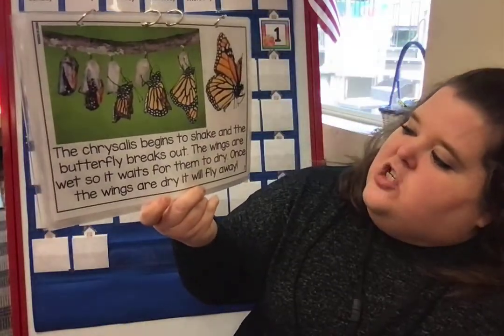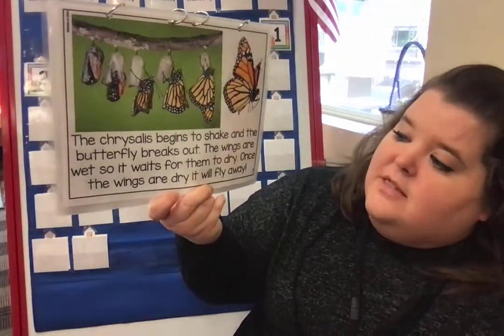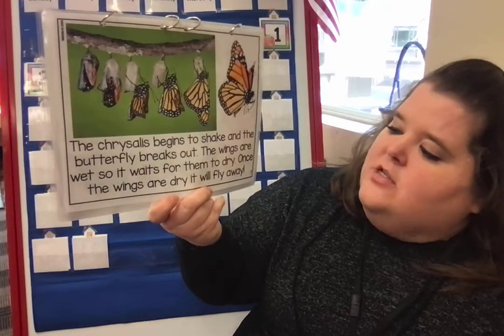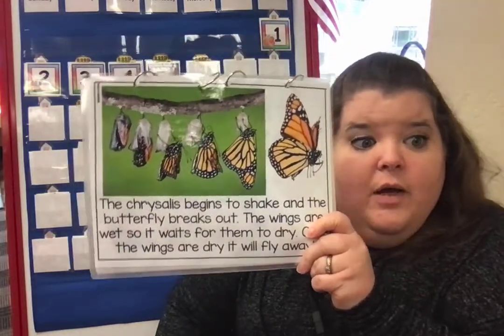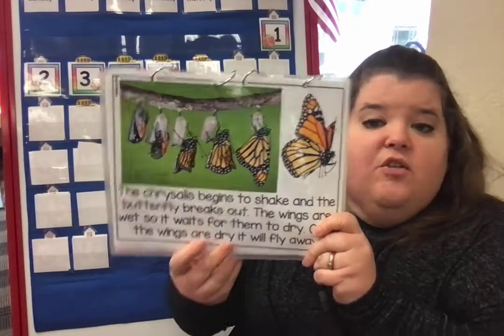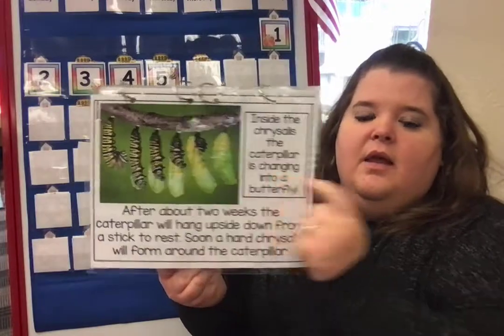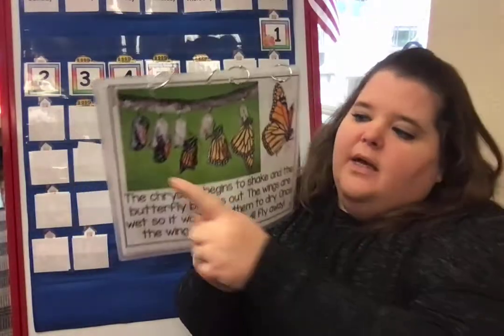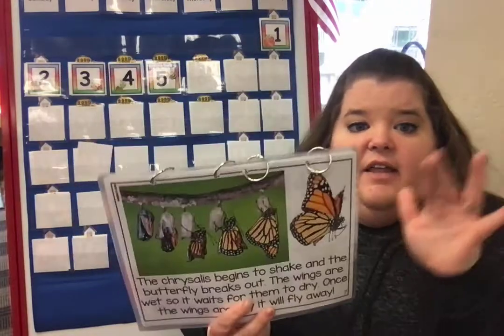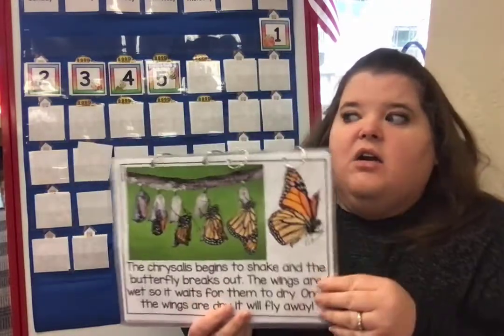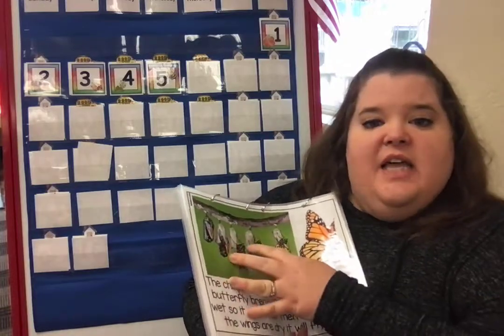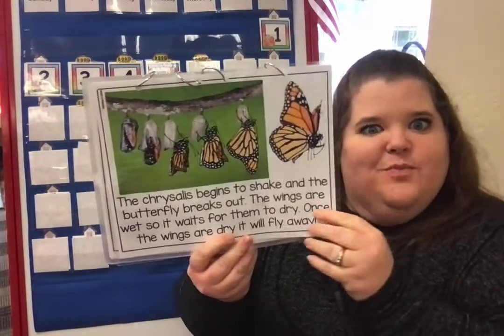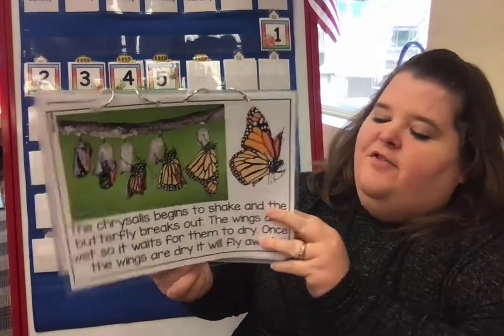Inside the chrysalis, the caterpillar is changing into a butterfly. The chrysalis begins to shake and the butterfly breaks out. The wings are wet, so it waits for them to dry, and once the wings are dry it will fly away. We're going to get to see this in our classroom — our chrysalises are formed, and pretty soon they're going to start wiggling and coming out. The liquid on their wings has a red look, so there'll be red on the outside of our habitat.